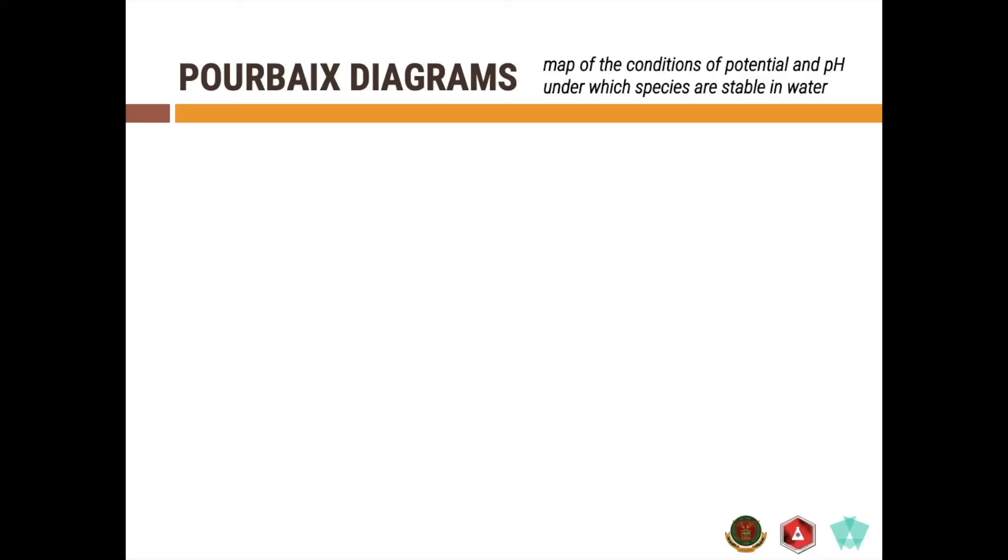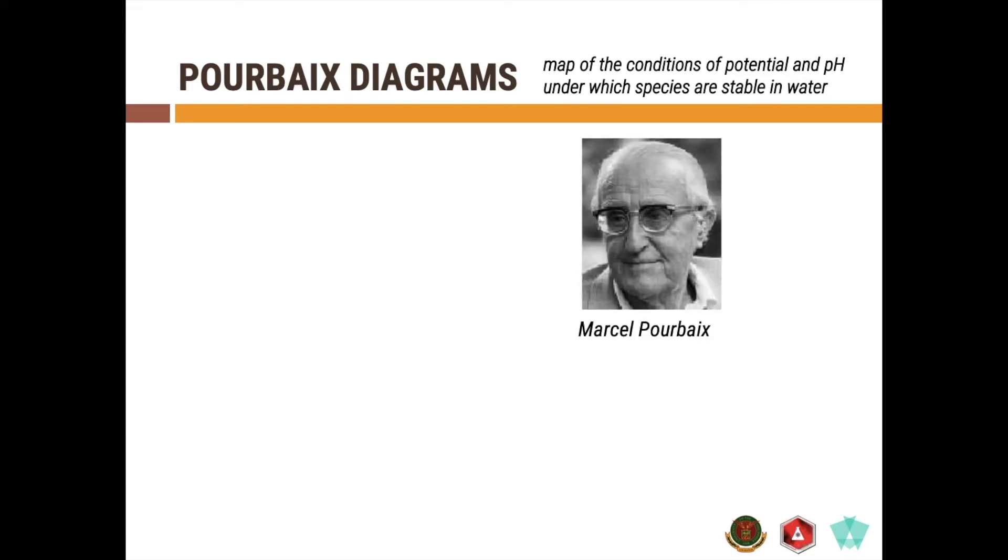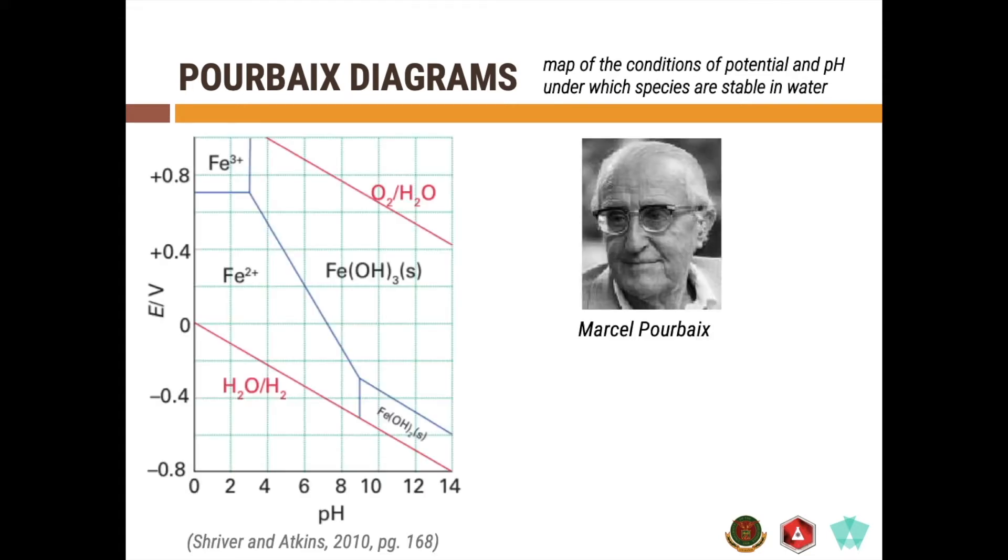Pourbaix diagrams can be regarded as maps wherein you can see the stability of given species in aqueous solution. It was introduced by Marcel Pourbaix and this is what a typical Pourbaix diagram looks like. You have here a plot of your potential, this is against a standard hydrogen electrode, against your pH values.